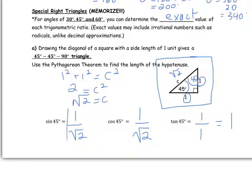We leave the sine and cosine of 45 degrees as fractions, because dividing 1 by the square root of 2 in a calculator gives a decimal, which is not an exact value. The three boxed answers — sine of 45 is 1 over root 2, cosine of 45 is 1 over root 2, and tangent of 45 is 1 — are the exact values.